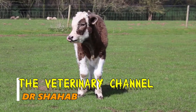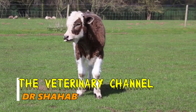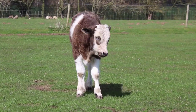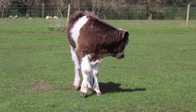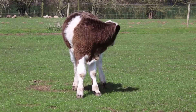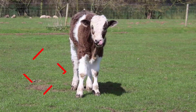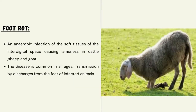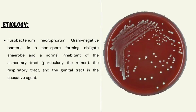Welcome to the veterinary channel. This video presentation is about the most important economic condition in dairy and beef animals — that is foot rot. Foot rot is an anaerobic infection of the soft tissue of the interdigital space causing lameness in cattle, sheep, and goat. The disease is common in all ages; transmission occurs by discharges from the feet of infected animals.